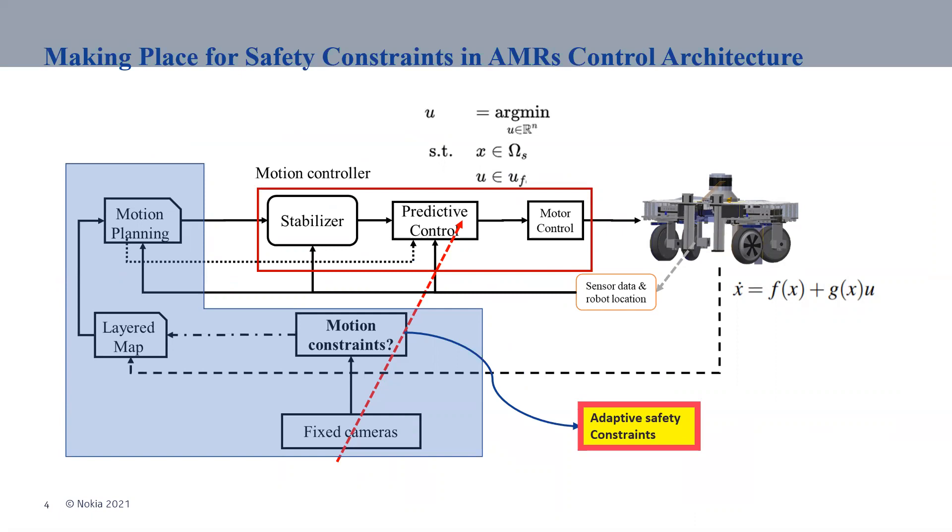The place where we can apply these safety constraints to the robot, which increases the safety more than any other layer compared to the motion planning layer or to the map which is based on zones, is on the motion controller layer which operates in real time.